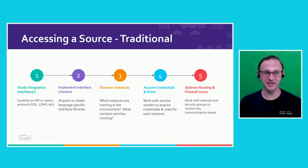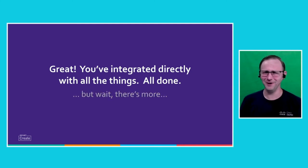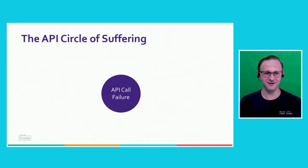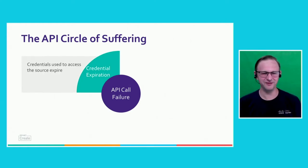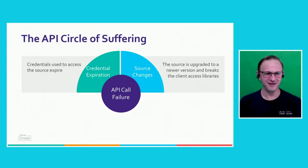Number five — my personal favorite — addressing routing and firewall issues. Now let's say you go through all that trouble to do that for your script and you've integrated directly with all the things. Eight months later, your phone rings at 2 a.m. and you have entered the API circle of suffering. Things that lead to API call failure, seemingly at the worst times: credential expiration — that's a classic. Source changes: the source might be upgraded to a newer version. Maybe you upgraded your Call Manager, or somebody did a minor version upgrade and failed to mention it to anybody and it changed the way the API behaves.